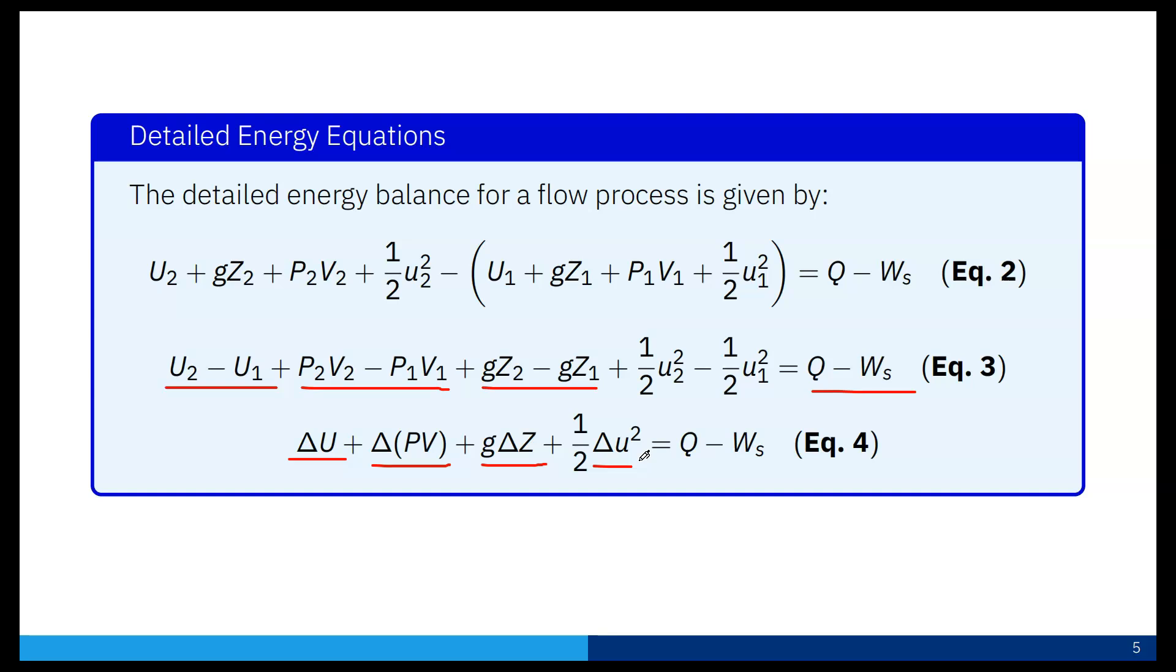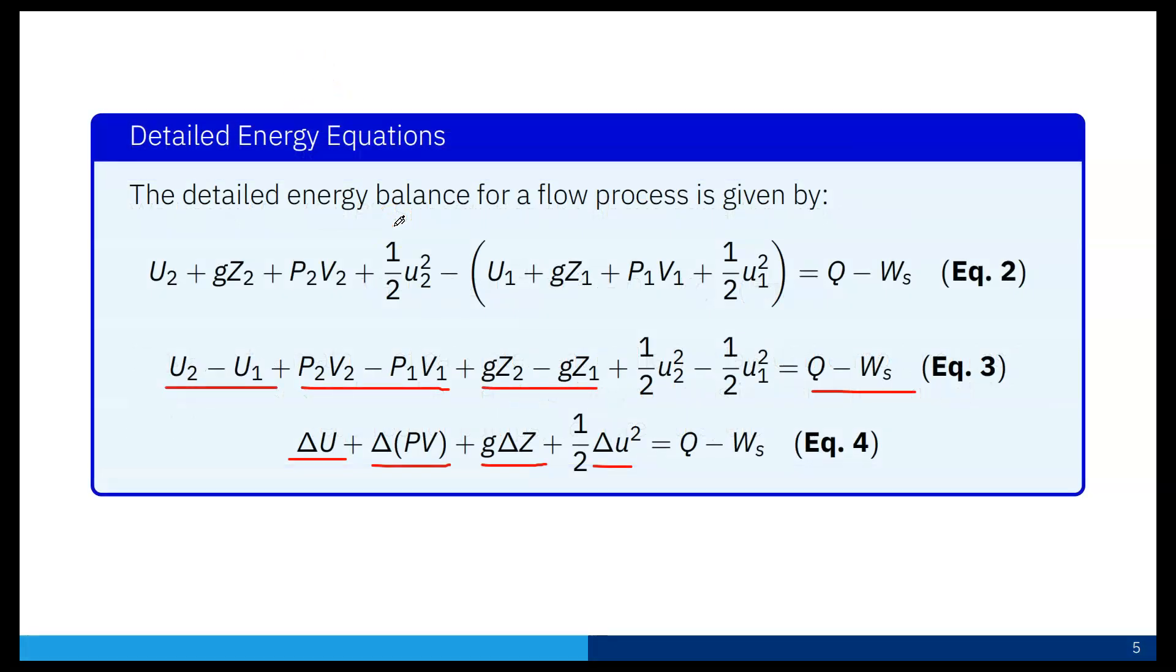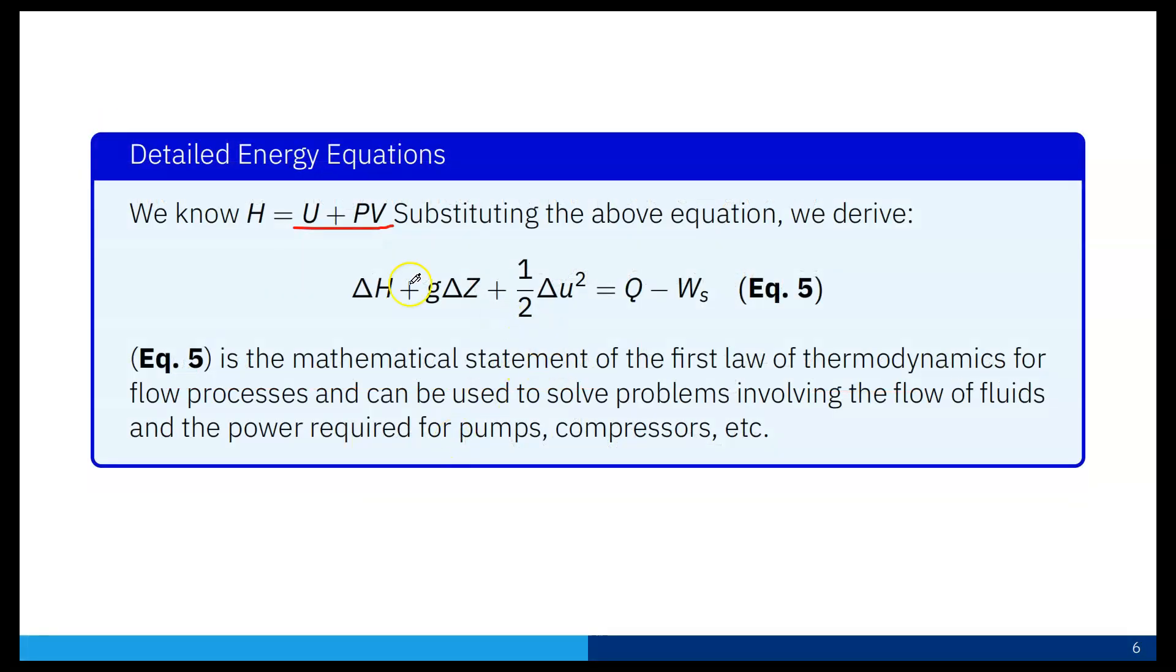We can write ΔU + Δ(PV) + gΔz + ½Δu² equals Q - Ws. We know that H equals U + PV, so if we substitute that, ΔU + Δ(PV) is ΔH. Therefore, ΔH + gΔz + ½Δu² equals Q - Ws. This is the mathematical statement of the first law of thermodynamics for flow process and can be used to solve problems involving flow of fluid and power required for pumps and compressors.